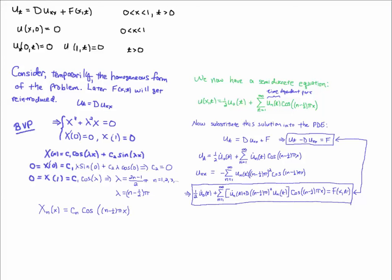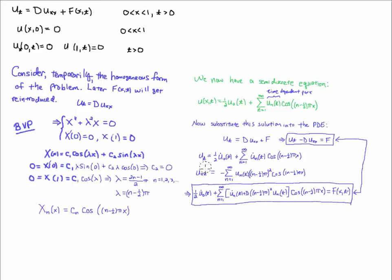I'm going to rewrite the PDE as u_t minus d·u_xx equals f, moving the derivative terms to the left-hand side and leaving f on the right. Taking the Fourier expansion and substituting into the PDE: differentiating with respect to t only touches u_0 and u_n, so I put dots over those — the cosine term is unchanged. Taking two derivatives with respect to x, u_0 drops out, and each differentiation of cosine brings out a factor of (n - 1/2)π via the chain rule, giving a factor of [(n - 1/2)π]² overall.